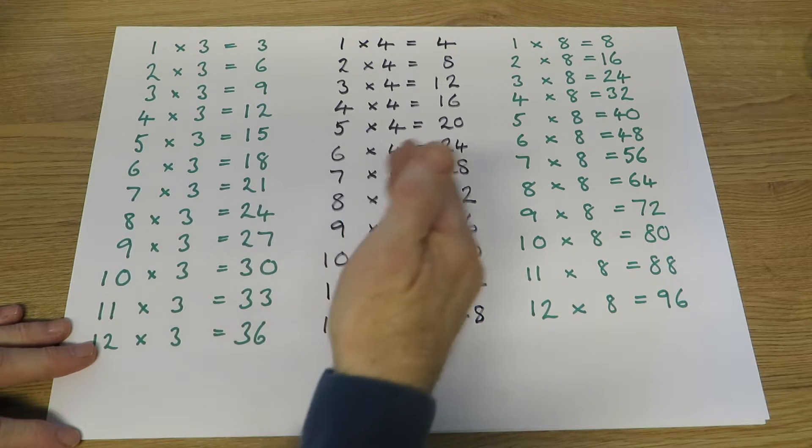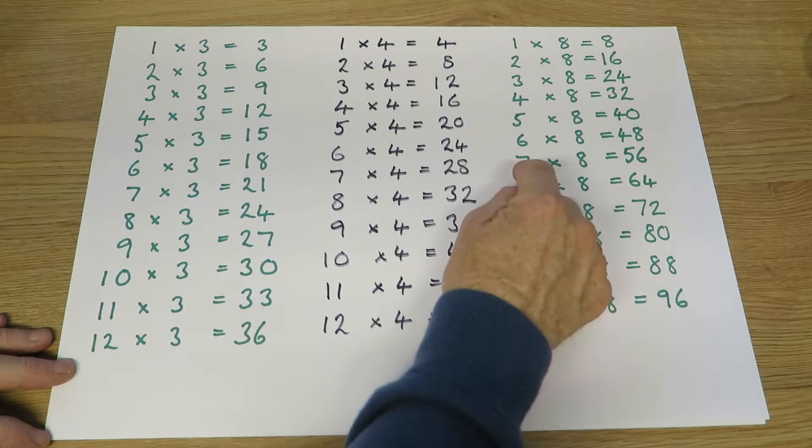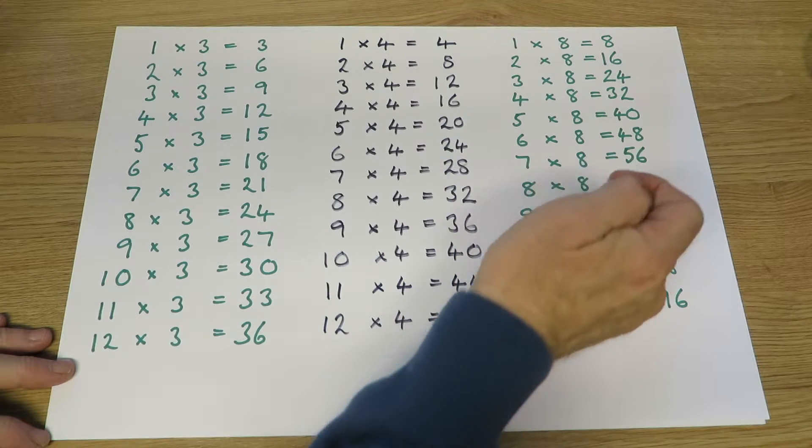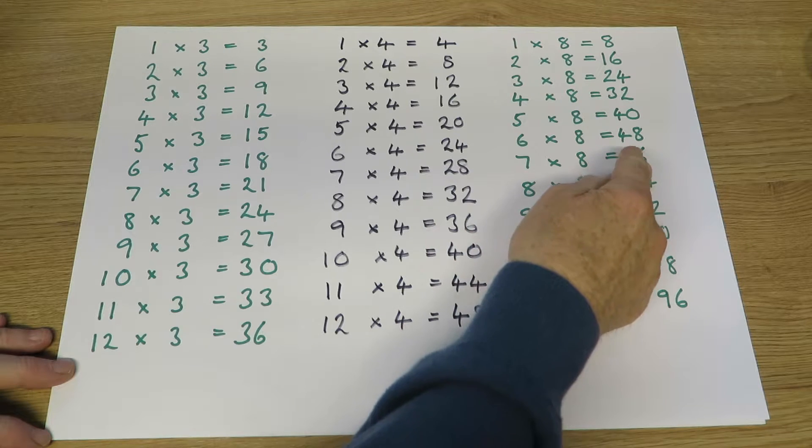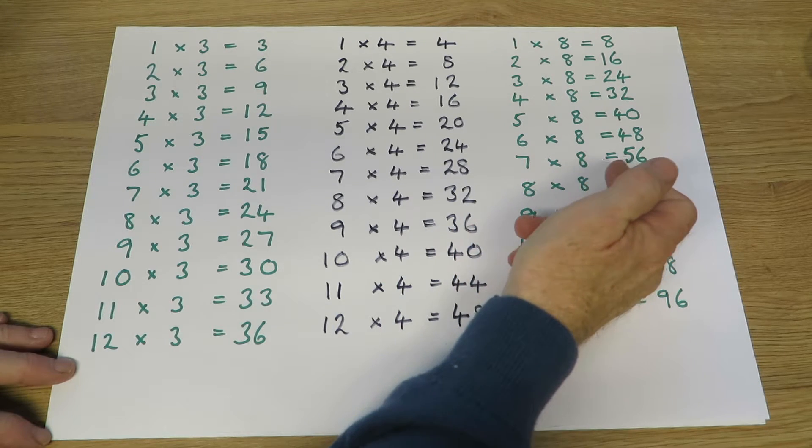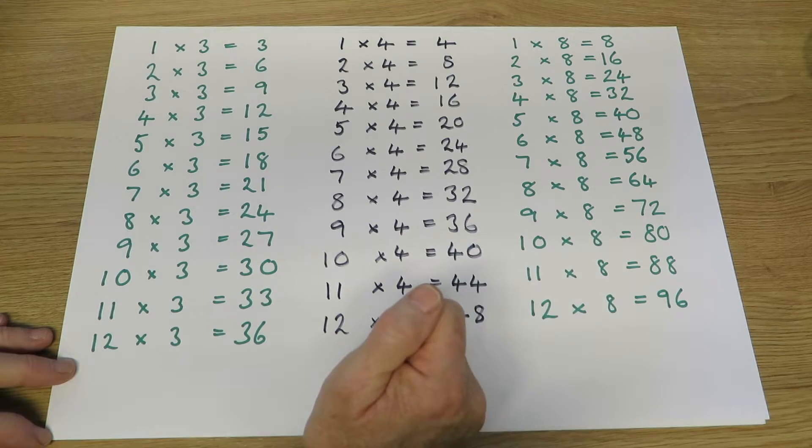So here's the threes, the fours, the eights. For example, they'll use the fact that seven eights are 56 to say that 56 divided by seven must be eight, or 56 divided by eight must be seven.